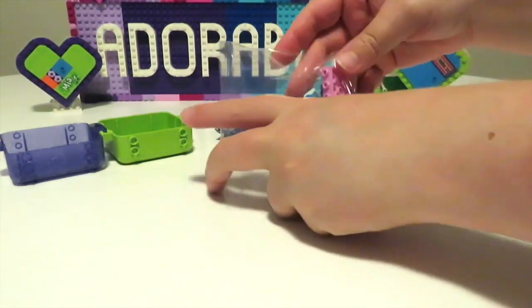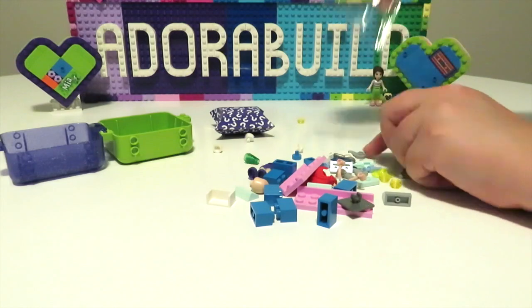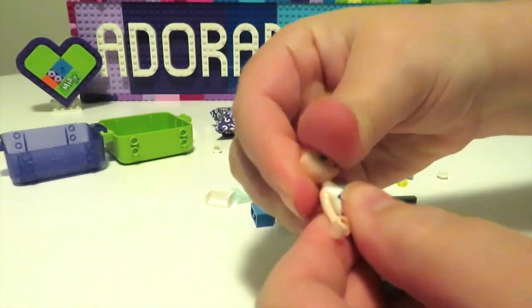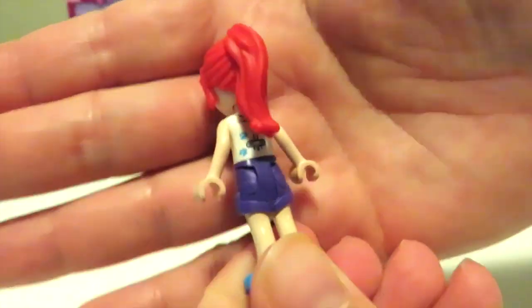So first up we have a Series 1 Play Cube. You can see here that with this Play Cube it does have the lime green on the back and then that trans purple glitter on the front.